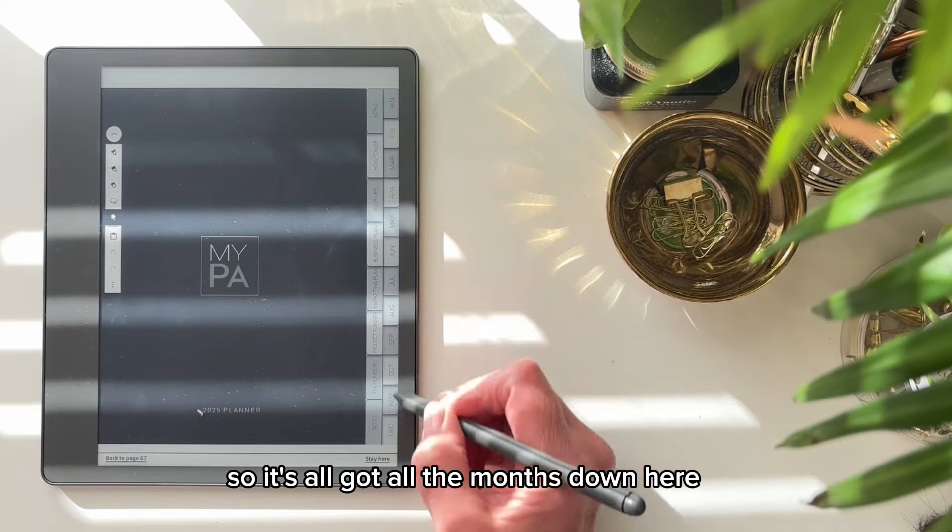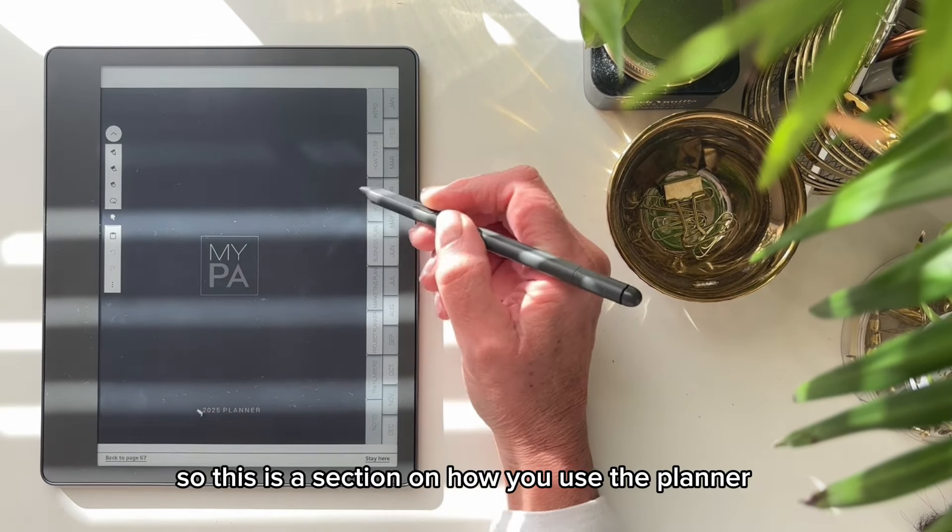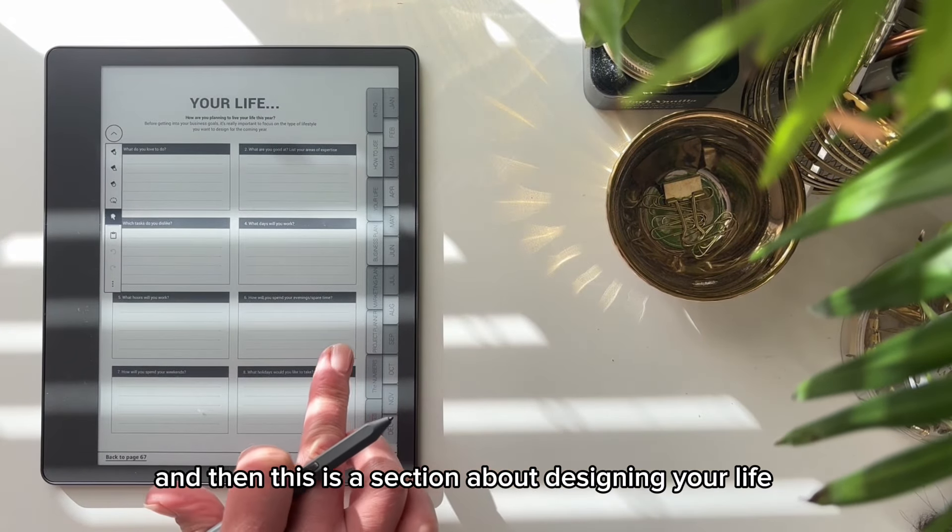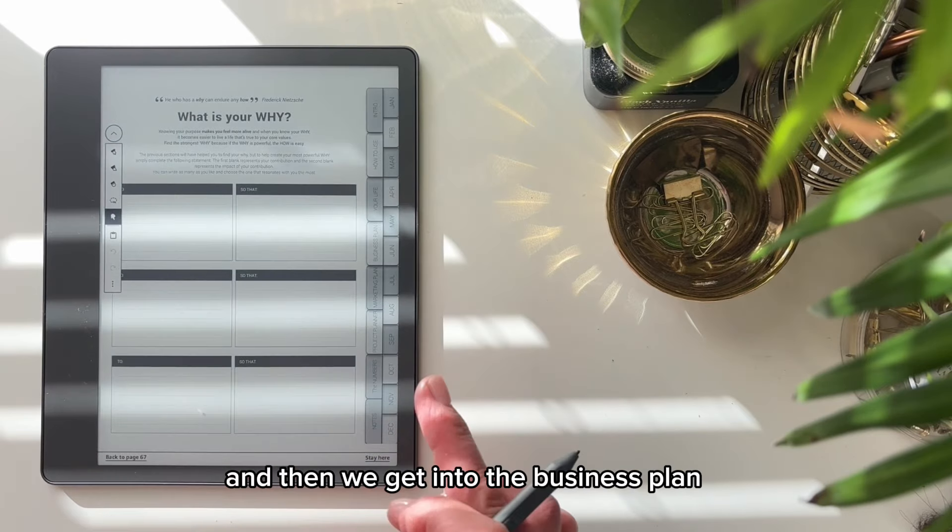So let's just take you through the sections. It's got all the months down here and then all the different sections here. So this is a section on how you use the planner. And then this is a section about designing your life. And then you've got your 2025 bucket list. And then we get into the business plan.